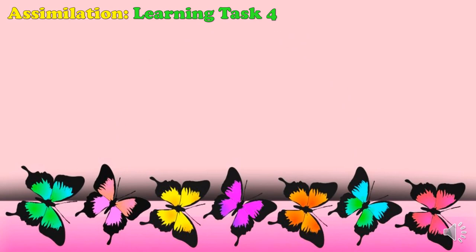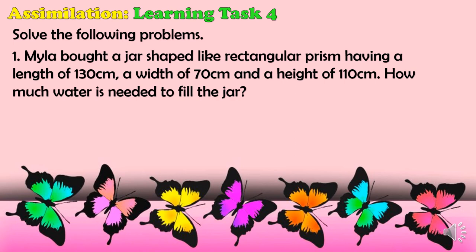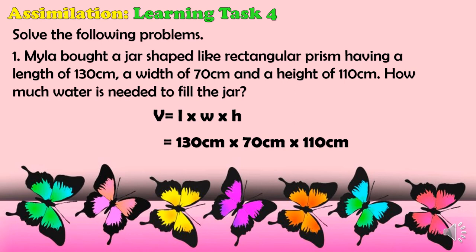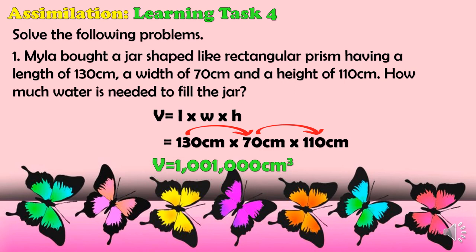For the Simulation Learning Task 4, solve the following problems. Problem 1: Viola bought a jar shaped like a rectangular prism having a length of 130 centimeters, a width of 70 centimeters, and a height of 110 centimeters. How much water is needed to fill the jar? Using V = L × W × H: 130 cm × 70 cm × 110 cm. Multiplying gives a volume of 1,001,000 cubic centimeters.